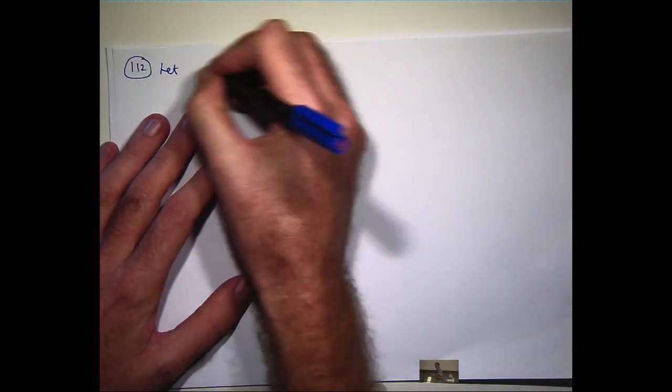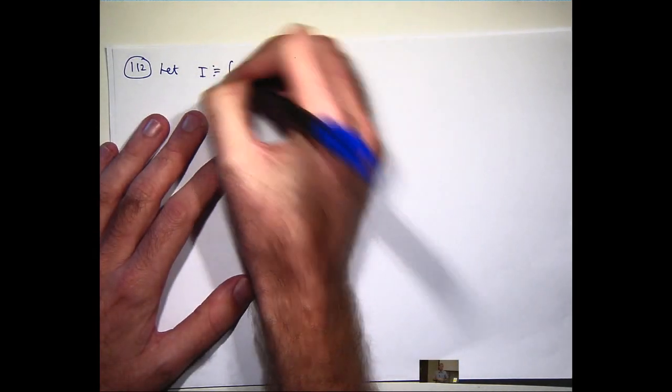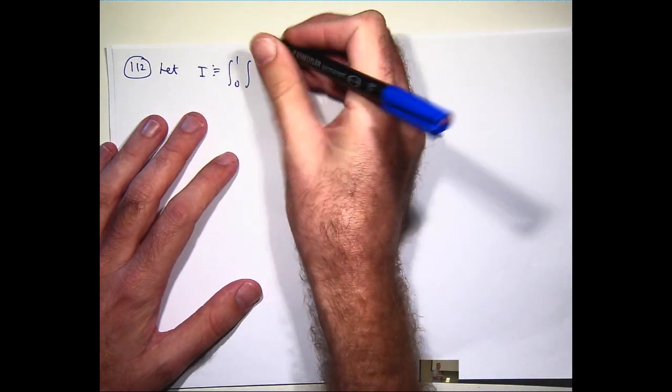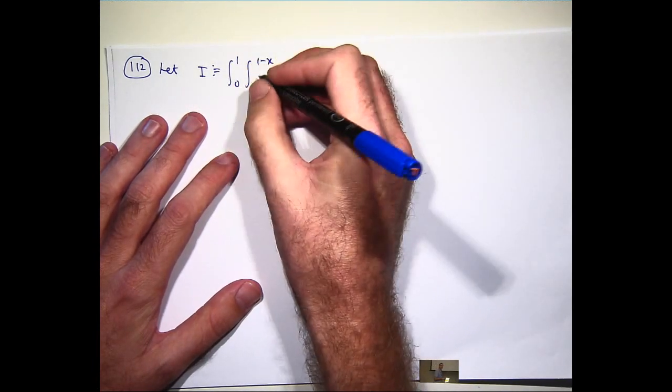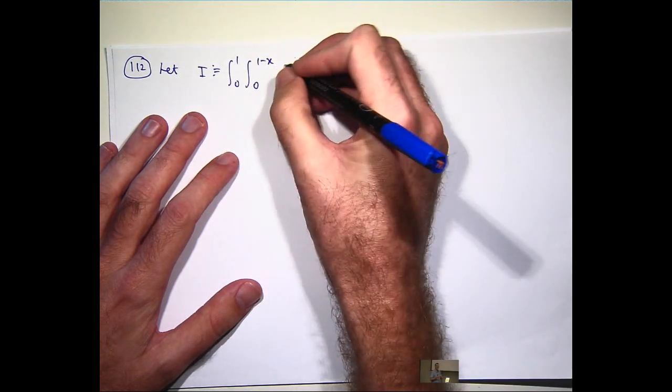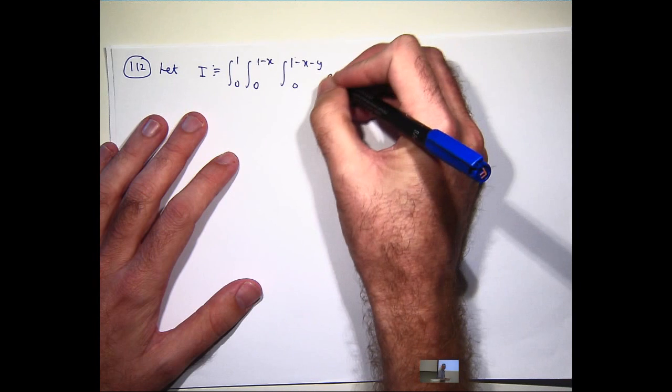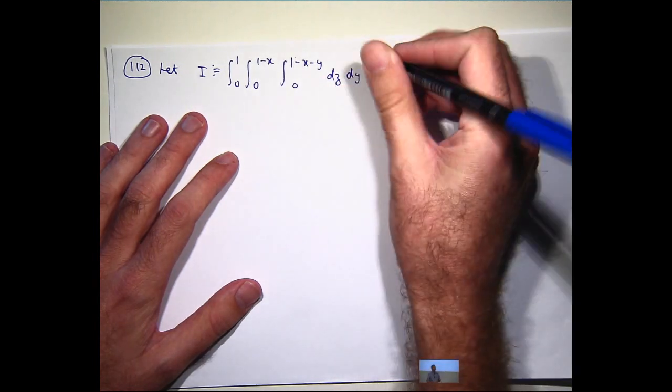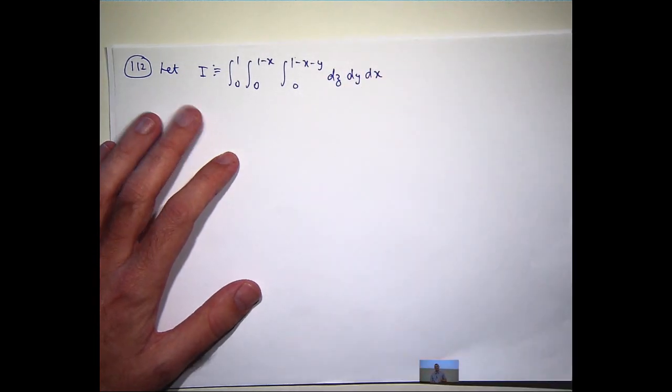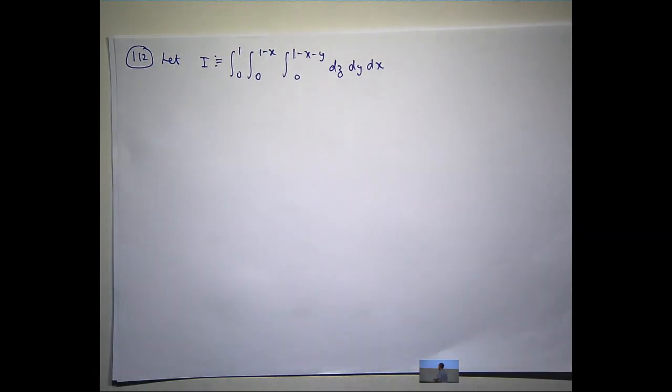So, I'm going to let I be the value of this triple integral. Okay, now the first thing we want to do is evaluate it and then interpret the answer.